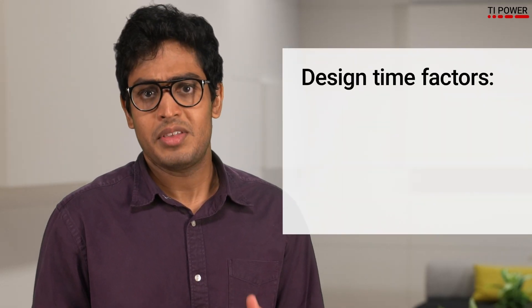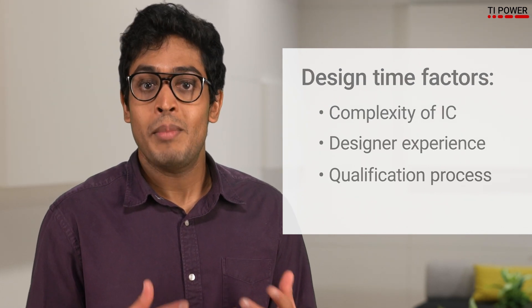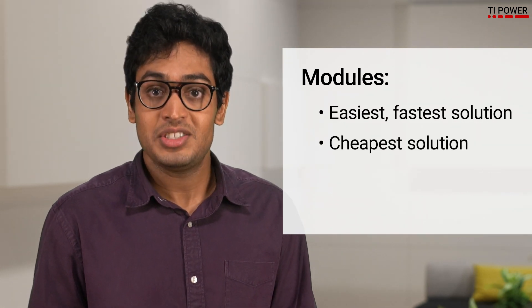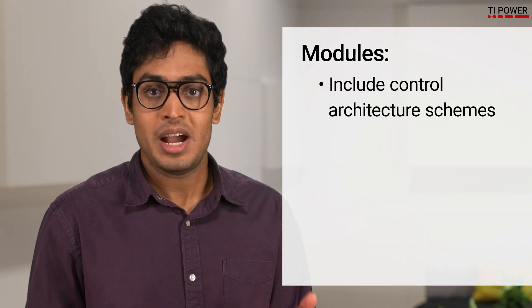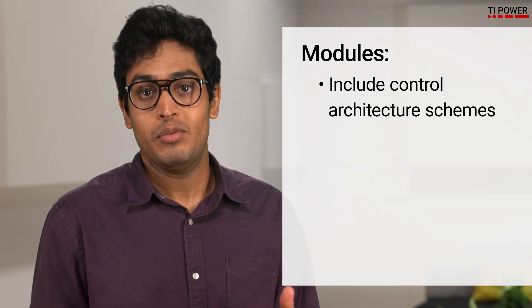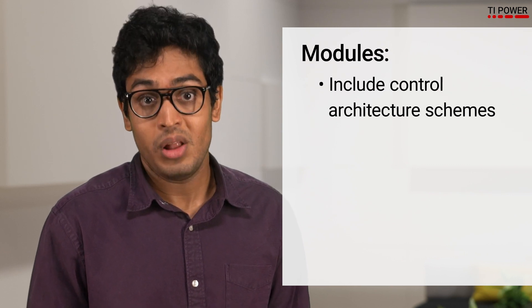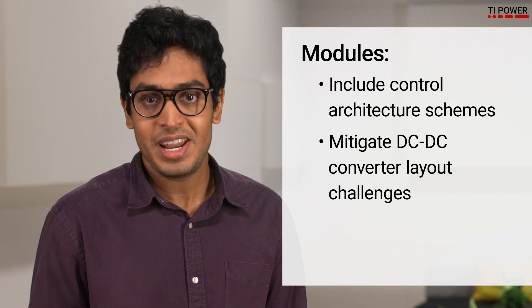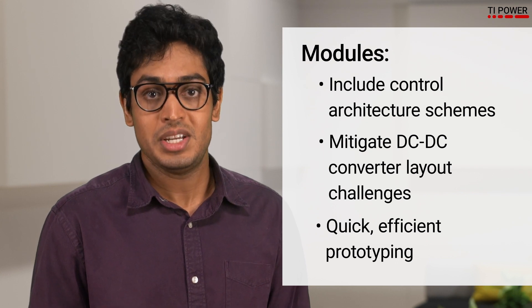Calculating design time depends on a variety of factors, like the complexity of the IC, experience of the designer, and qualification process. A module is usually the easiest, fastest solution, and thus the cheapest, as they reduce design time by almost half. This is because the designer doesn't necessarily need to be involved with the control architecture scheme. There is no inductor selection, qualification, and sourcing needed. A lot of the DC-DC converter layout challenges are mitigated, and prototyping can be quick and efficient due to the simplicity of the solution.